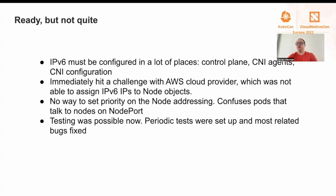After we found out the right settings with the help of the Kubernetes developers, we first hit a challenge with the AWS cloud provider. It was not aware of IPv6 addresses at all, which was not really good for us as we needed it to assign the IPv6 addresses to node objects. We fixed that, and then another challenge arose.